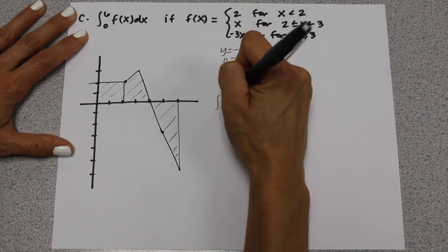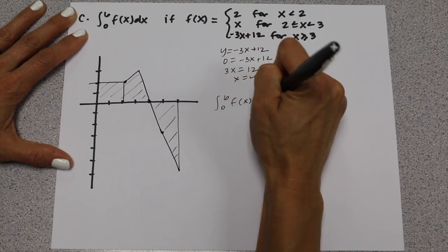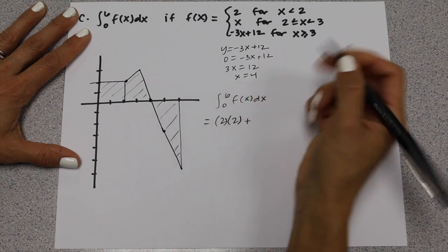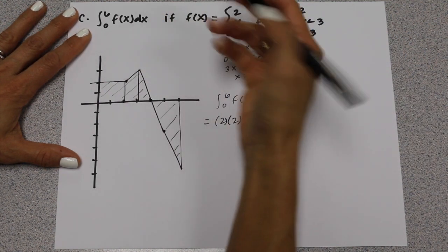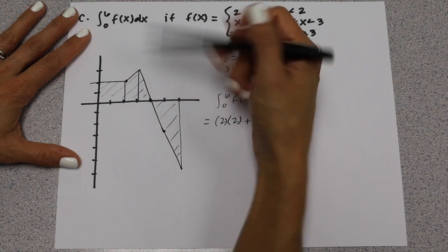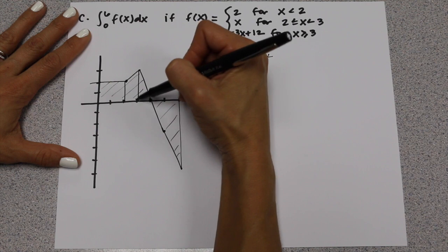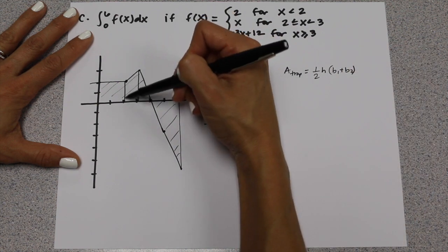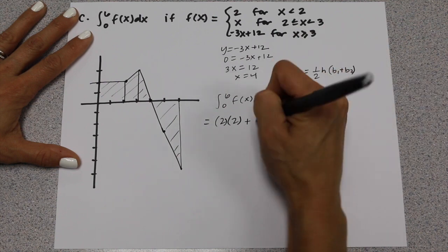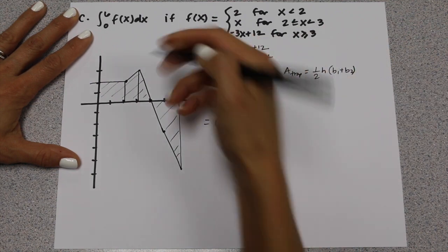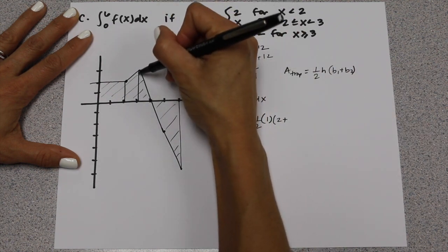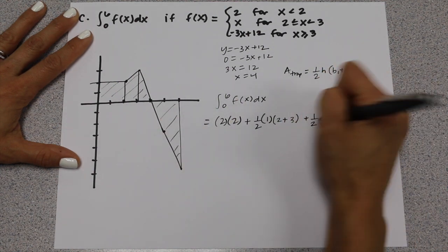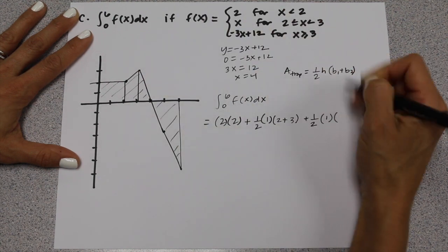To evaluate the definite integral from 0 to 6 of f dx, the first area is the square: 2 times 2. Then we add a trapezoid: the area of a trapezoid is one-half the height times the quantity (base 1 plus base 2). The height is 1, base 1 is a length of 2, base 2 is a length of 3. Then we have a triangle: one-half base times height, with base 1 and height 3.